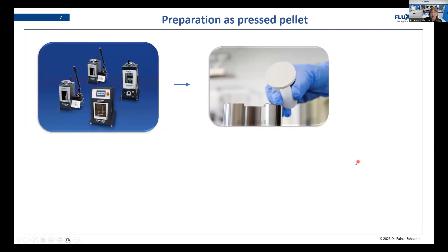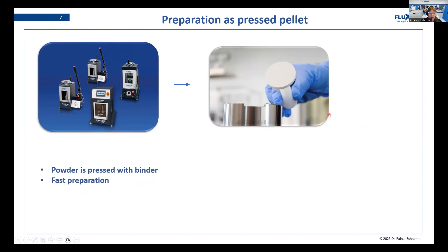How can a pressed pellet be prepared? There are different kinds of presses. From Fluxana, you have automatic presses where you can basically just press a button and the press will do everything by itself, and you also have manual presses. Both types of presses result in a pressed pellet, where powder is pressed with a binder — it's a very fast preparation.